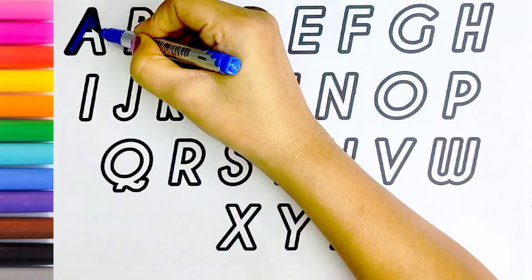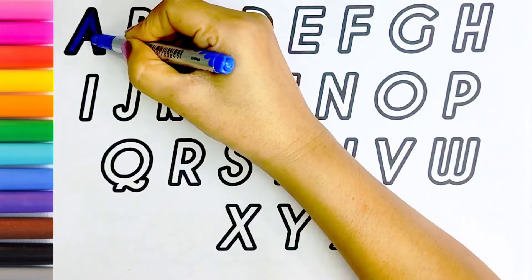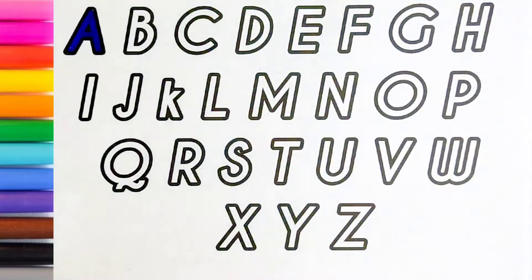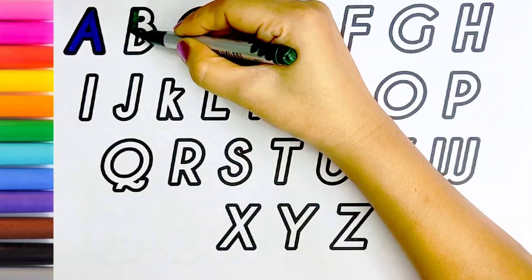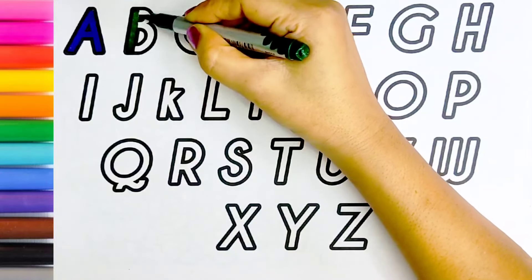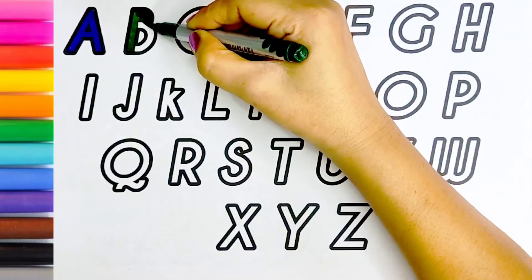A. A for apple. Dark green color. B. B for baby.